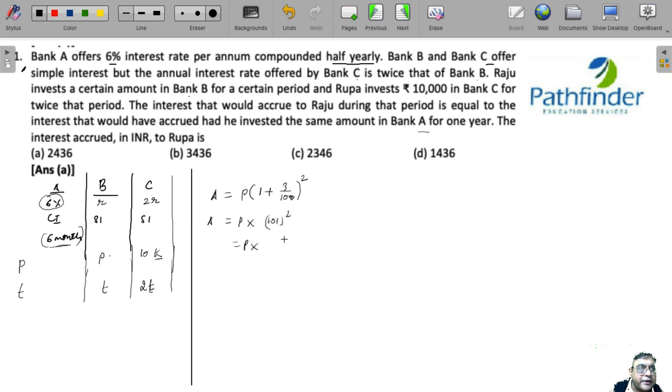Which is principle multiplied by 1.0609. So principle multiplied by 1.0609 - what does this tell you?